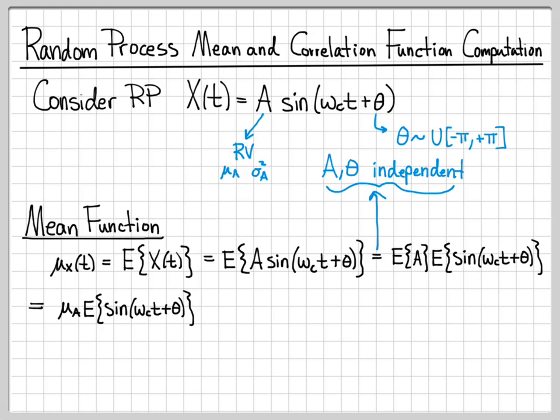Well, what's the expected value of A? Well, the expected value of A is just mu A. So we replace the expected value of A with mu A. And we're left with just this expected value of the sine quantity. We can rewrite this as follows.